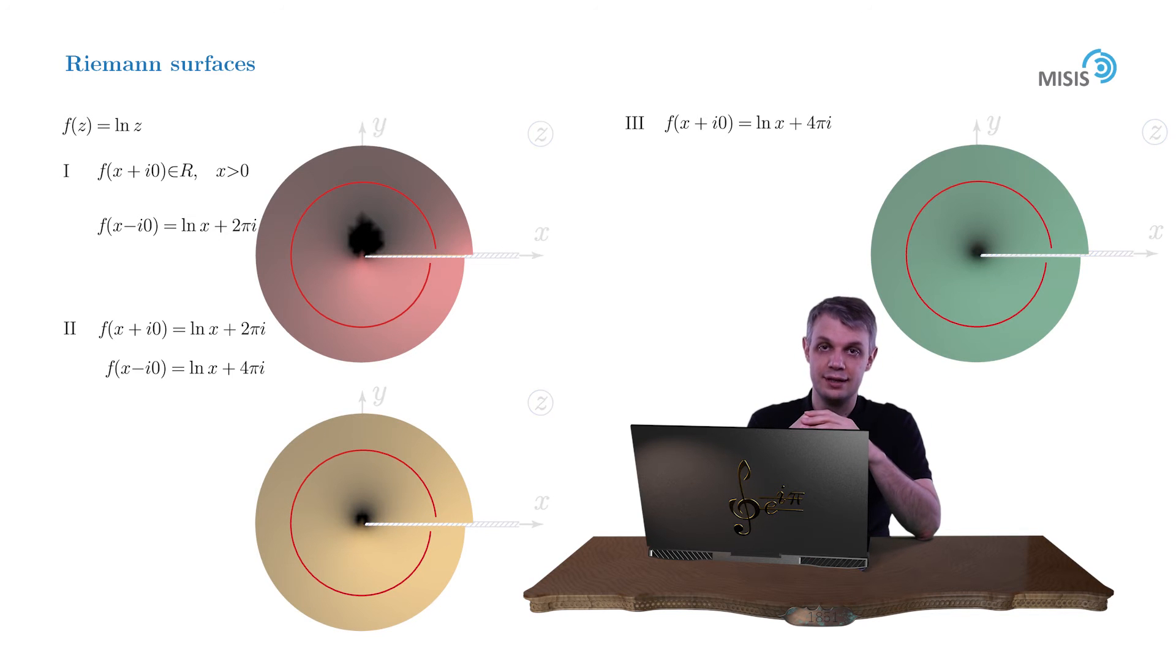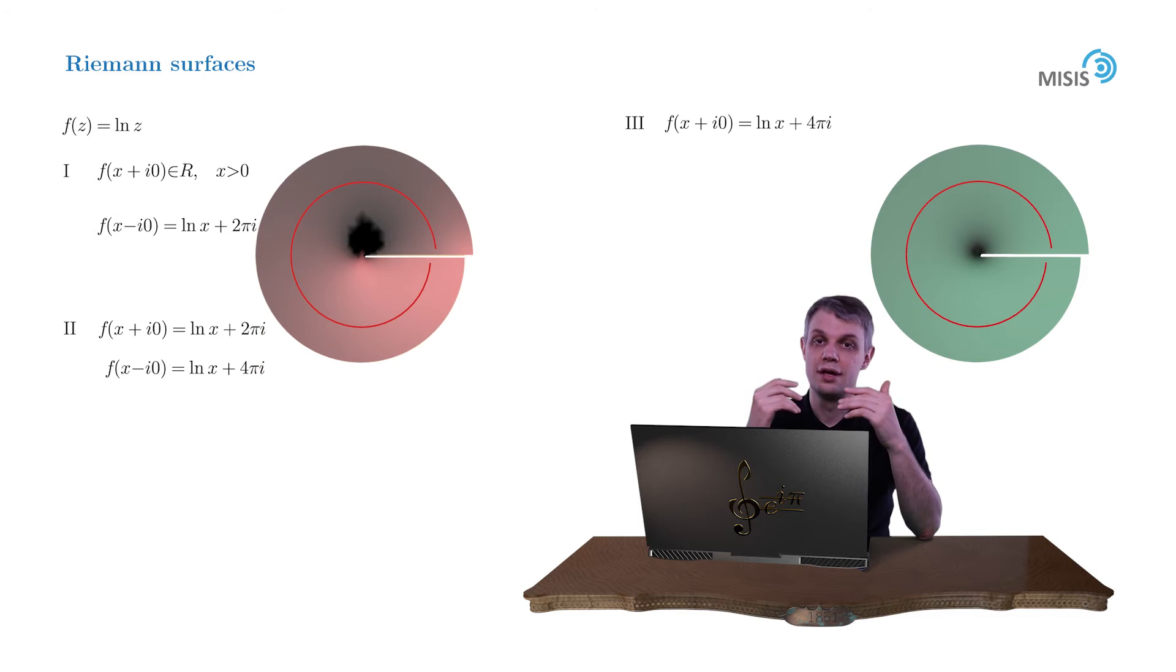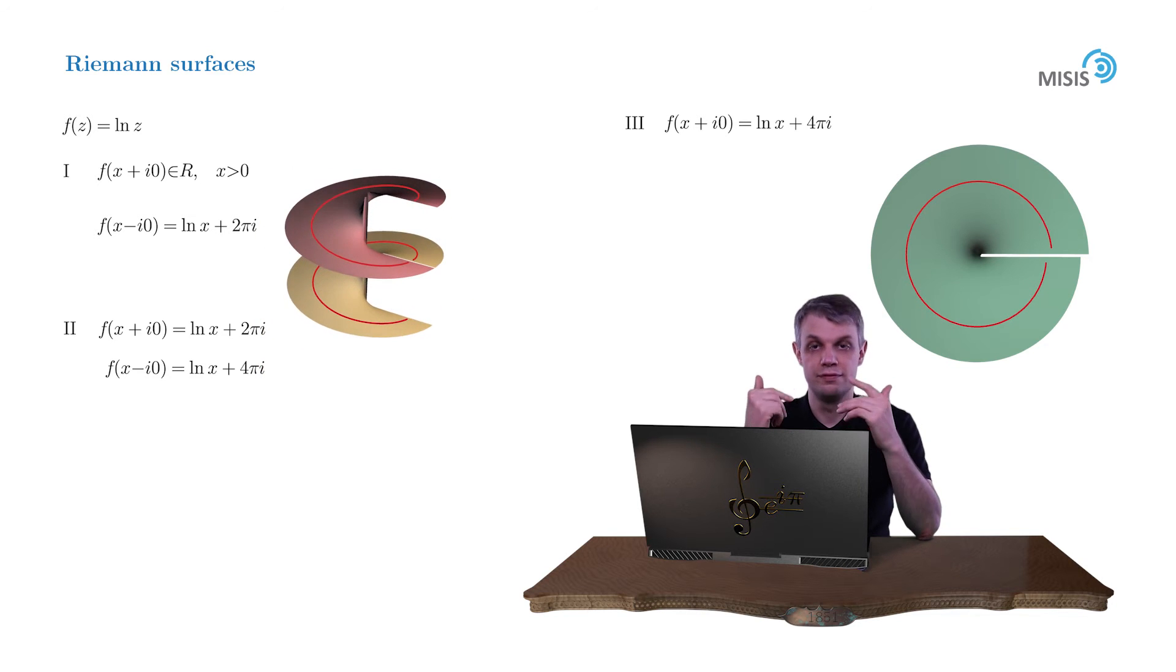And here comes the Riemann idea. Let's put the second complex plane under the first one, and now let's glue the lower bank of the branch cut of the first complex plane with the upper bank of the branch cut of the second plane. We can do this because the values of the corresponding regular branches coincide.